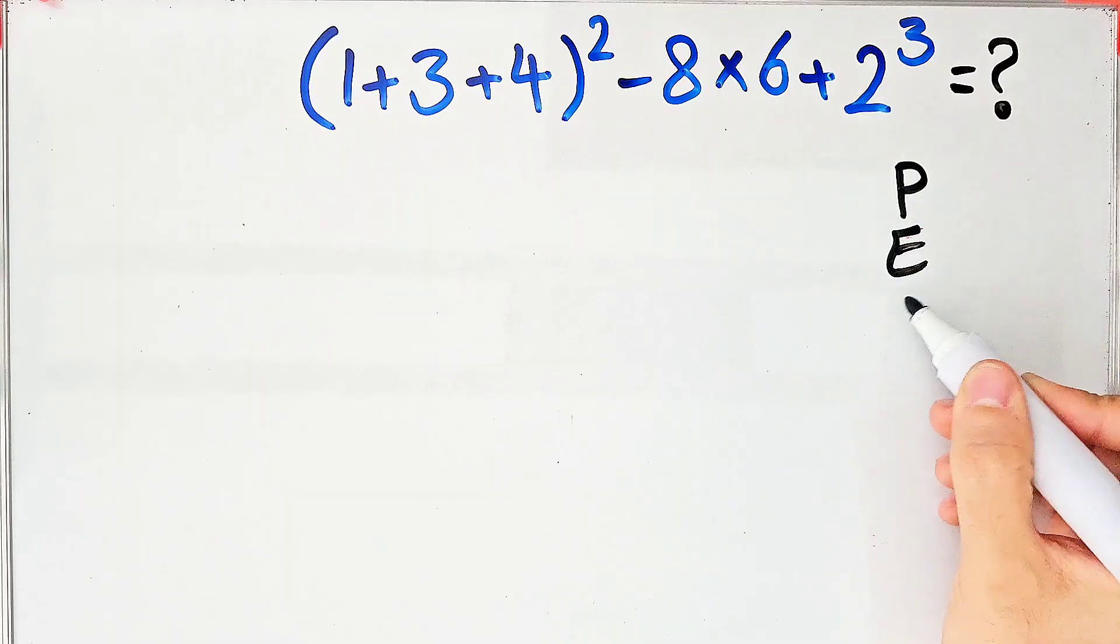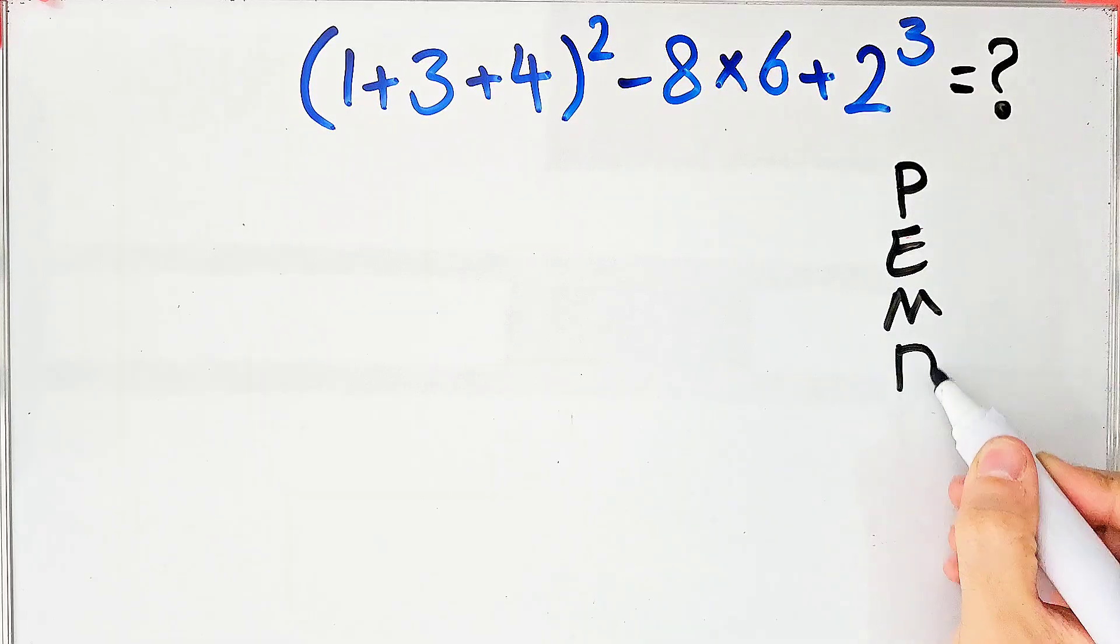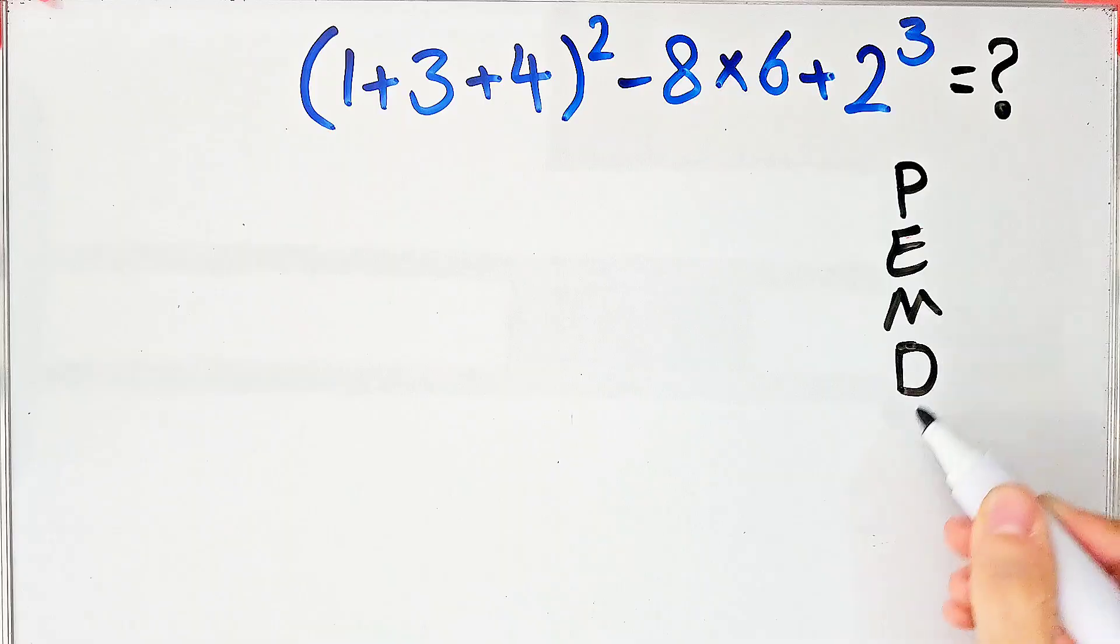PEMDAS shows the priority of the mathematical operations and if you don't pay attention to this rule you get the wrong answer.